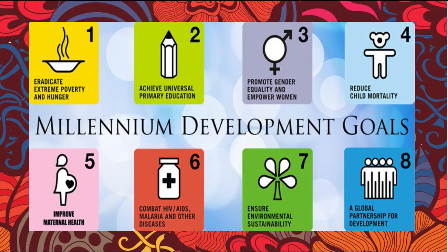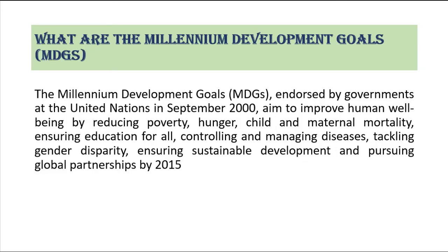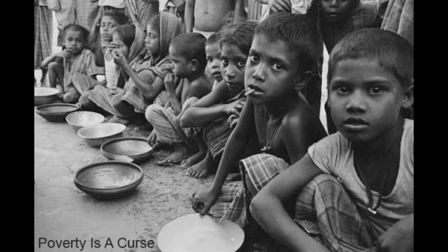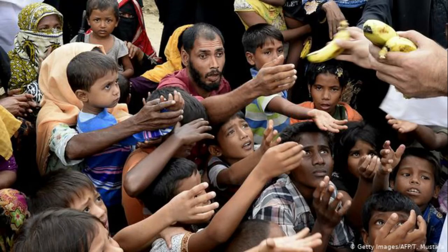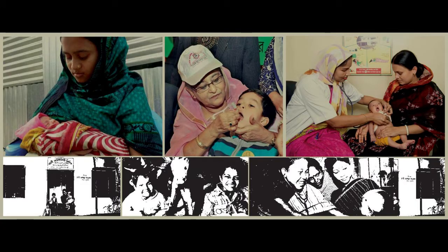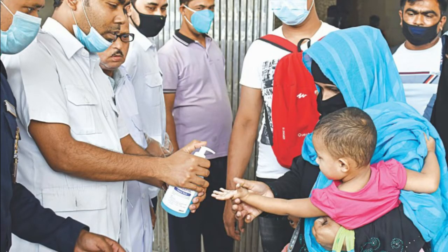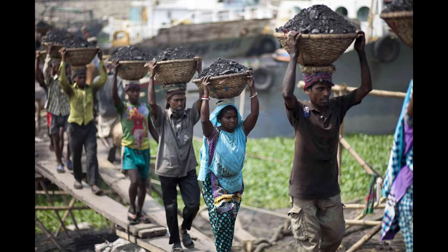Hello everyone, welcome to our tutorial. In this video we are going to look at Millennium Development Goals 7 and 8, and also Sustainable Development Goal 1. This video will help us know to what extent Bangladesh achieved them. The Millennium Development Goals, endorsed by governments at the United Nations in September 2000, aim to improve human well-being by reducing poverty, hunger, child and maternal mortality, ensuring education for all, controlling disease, tackling gender disparity, ensuring sustainable development, and pursuing global partnerships by 2015.